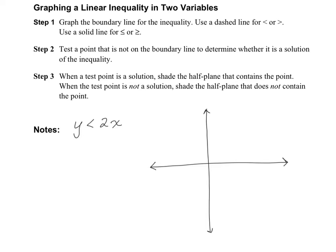Let's do an example. We're going to graph y is less than 2x. Here's my coordinate plane, and first we're going to graph y equals 2x. That's going to have a y-intercept of zero and a slope of two. So we count up two and over one to get a point, up two over one for another point, and also down two over one for points in the other direction. Now we need to draw the line itself. It is less than, not less than or equal to, so we use a dashed line through these points.